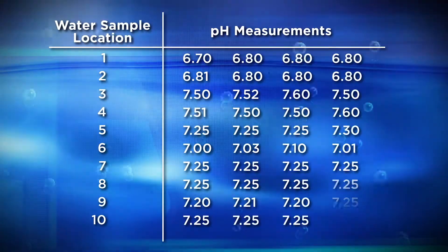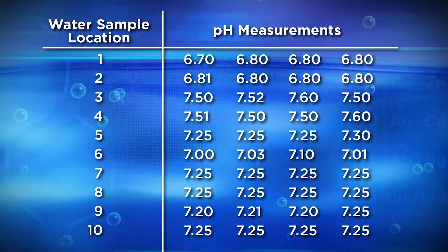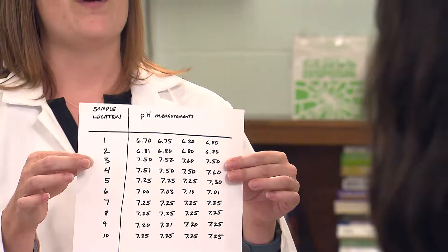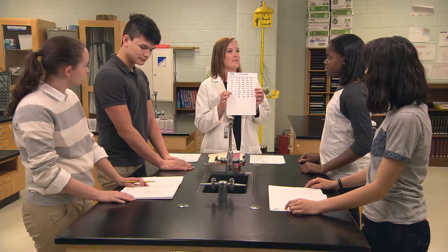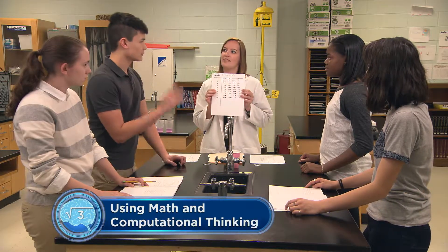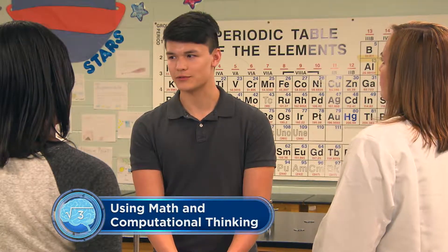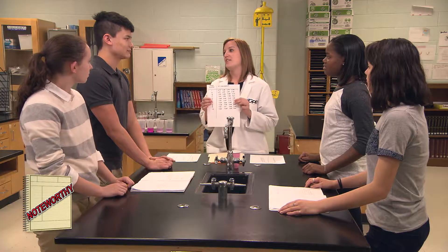So let's look at a sample of data that could have been collected if we had four teams working on this experiment. This data table is very helpful because it shows a lot of numbers all at once. If we utilize the science practice of using mathematics and computational thinking, we can easily calculate a number called the average or the mean value of pH at each station. Tell me why we want to calculate an average value for the pH values at each station. By calculating the average, we can show the results of our measurements at each station using just one number — that makes it easier to understand. Calculating an average number makes it easier for us to see patterns in the data.